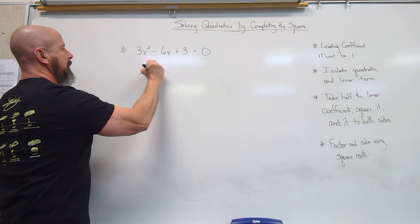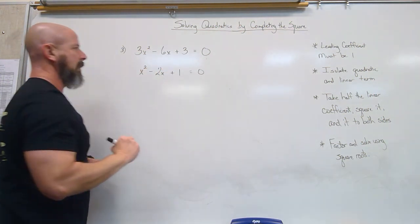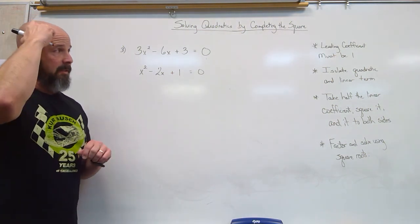So if I divide everything by 3, I get x² minus 2x plus 1 is 0. Now I've satisfied that first condition.